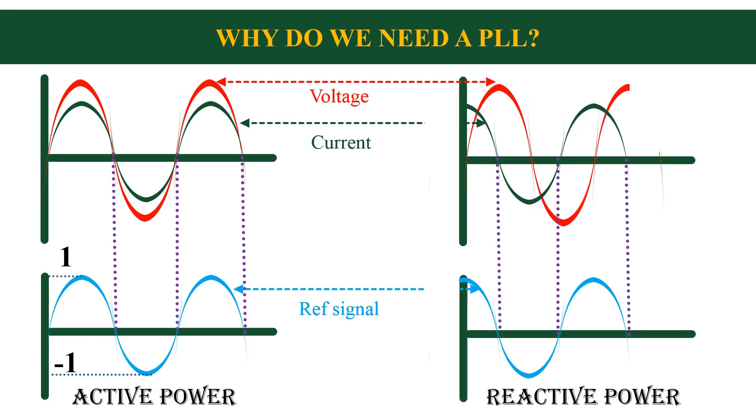Similarly, when we need to send reactive power to the grid, we use PLL to generate a signal which is 90 degrees out of phase with the actual voltage.